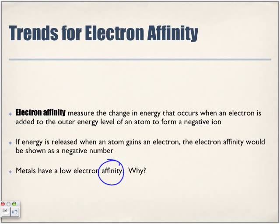They're more likely to want to get rid of it, also because the energy level that's next in line — the outermost energy level that has the one valence electron of, let's say, something like lithium — it's more likely to want to get rid of it because its inner energy level is already at its stable octet.